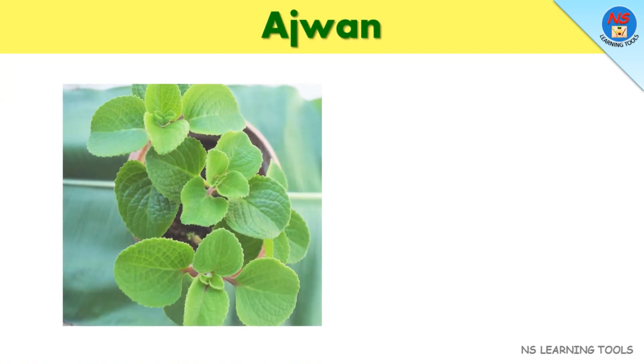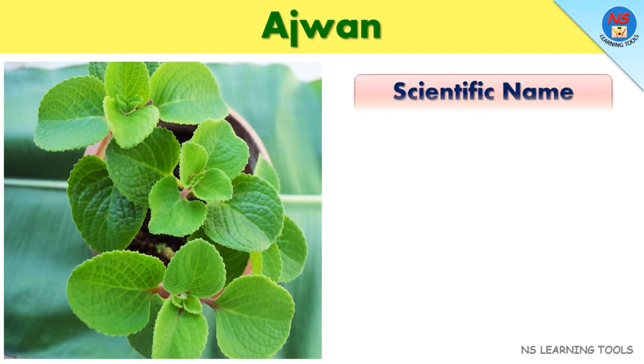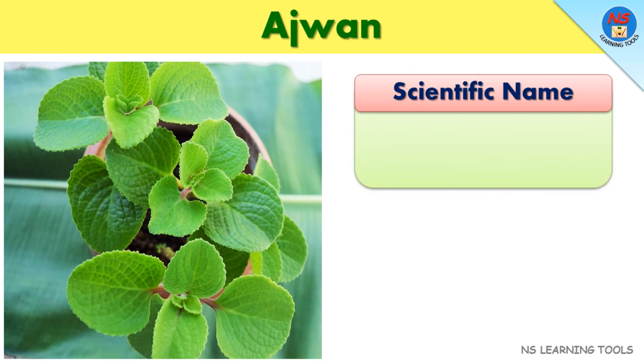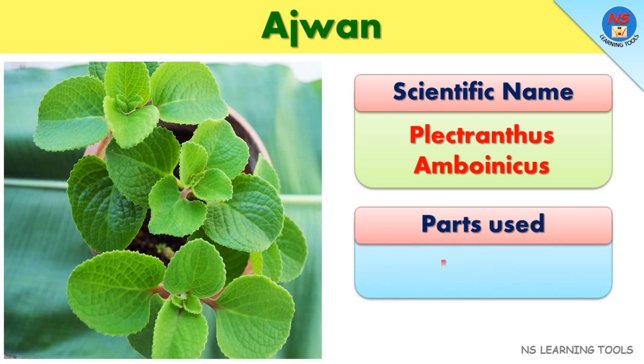Ajuan. Scientific name: Plectronthus amboinicus. Parts used: Leaves.